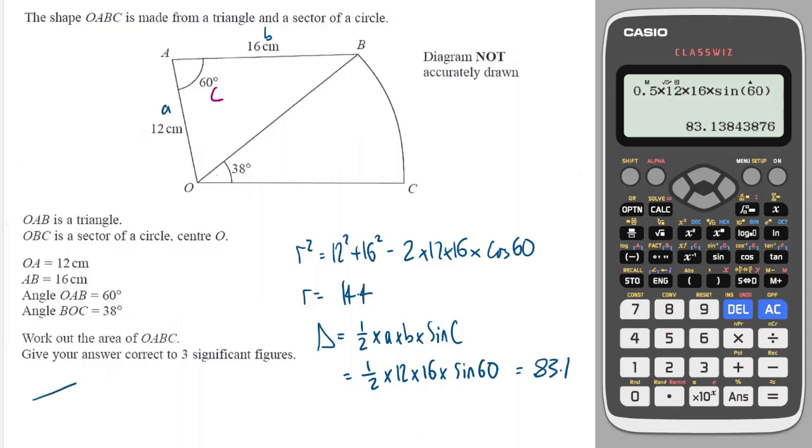And now over to the sector. So the formula for the sector is the angle over 360 multiplied by π multiplied by r squared, which we worked out was 14.4. So I'll do 38 over 360 times by π times by 14.4 squared,